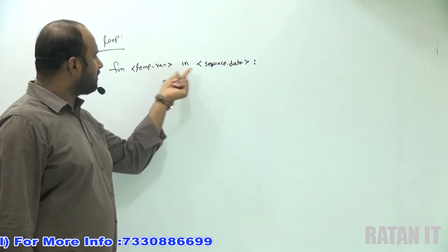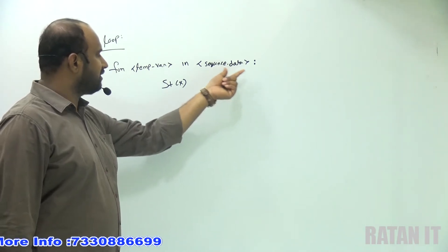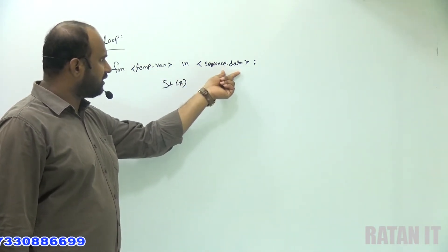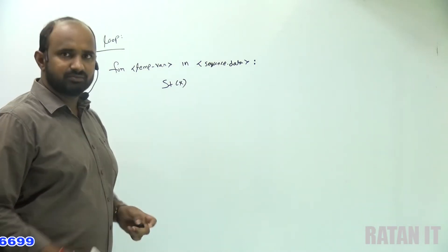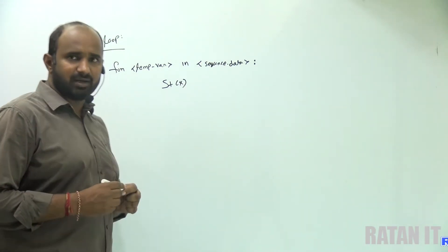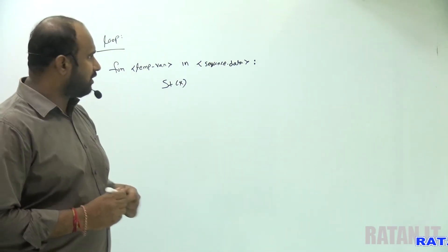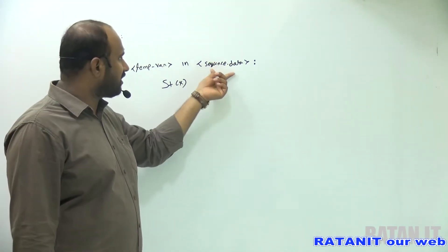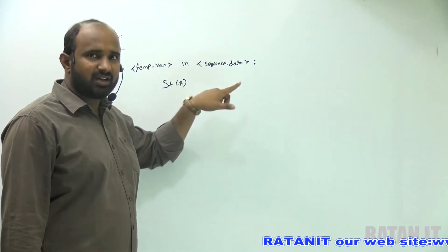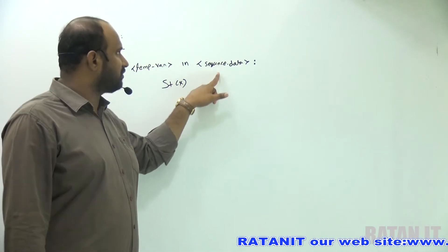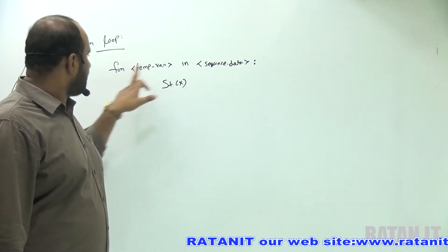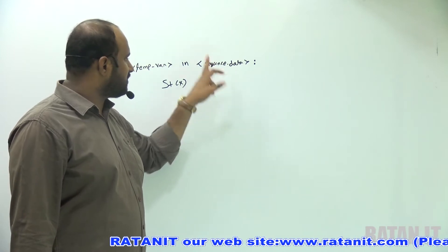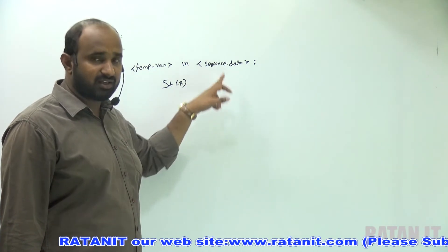For temporary variable in sequence data — after 'in' you can write the data, and the data must be iterable data. Iterable data means data you can iterate — if you have a list of data, it is iterable; if you have array data, it is iterable. So for temporary variable in sequence data, this data must be iterable data.